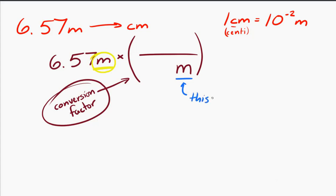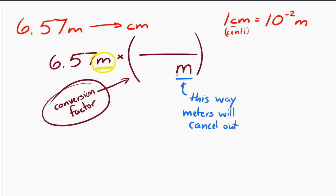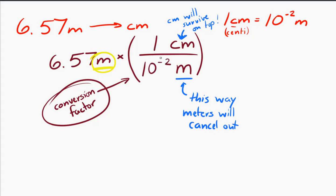If I have meters on the bottom and centimeters on the top, I need the same amount of stuff on both sides. Since 1 centimeter equals 10 to the minus 2 meters, that tells me what to put into my conversion factor. When you multiply it out, 6.57 meters is the same as 657 centimeters.